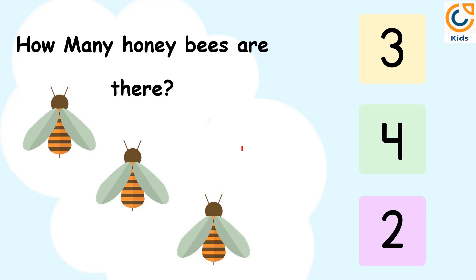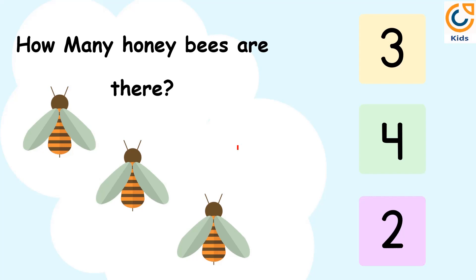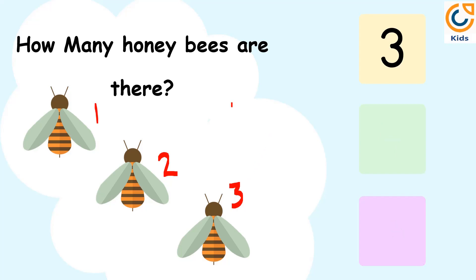How many honey bees are there? Let's count the number of bees. 1. 2. 3. There are 3 bees. So, the answer is 3.